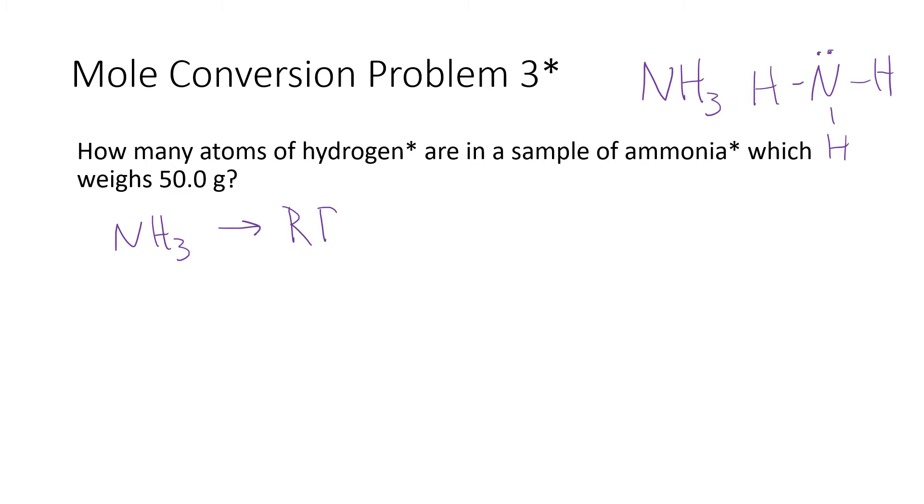A molecule of ammonia is one nitrogen and three hydrogens. So when we use Avogadro's number, we can find molecules of ammonia, but this problem isn't asking for that. It's asking for atoms of hydrogen. Well, if you look at one molecule of ammonia, it contains three atoms of hydrogen. So once we know how many molecules of ammonia we have, we can simply multiply that number times three to get how many atoms of hydrogen there are.